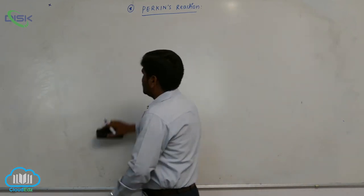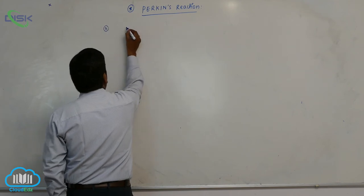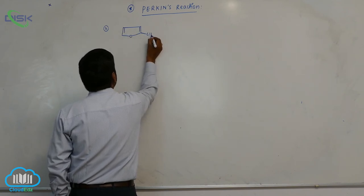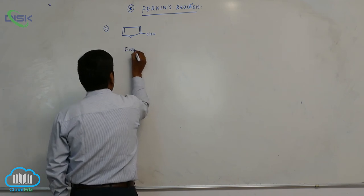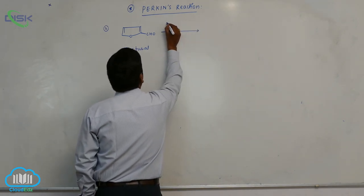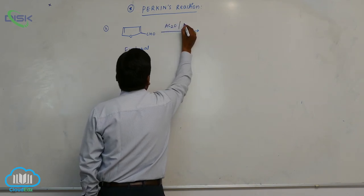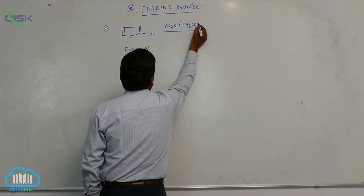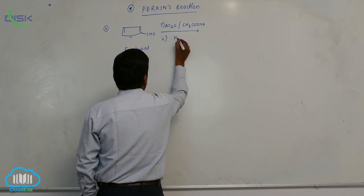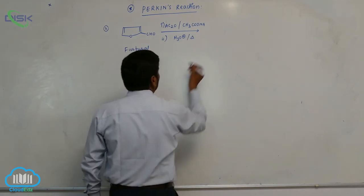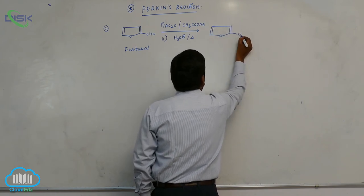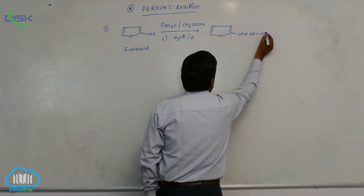This is the first example. The second example of Perkin reaction involves furfural (purpurol), an aromatic aldehyde. When furfural reacts with acetic anhydride in the presence of sodium acetate, followed by H3O+ and heating, it forms CH double bond CH then COOH.